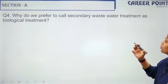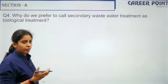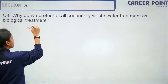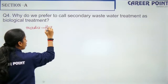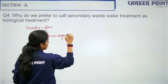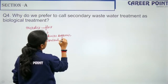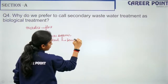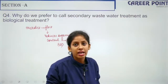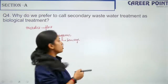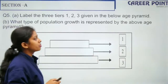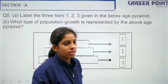Question 4: 'Why do we prefer to call secondary wastewater treatment biological treatment?' This comes from the sewage treatment topic. The answer: because microbes in the form of flocs are involved, and they reduce the organic content in sewage water by consuming the biological oxygen demand (BOD) from organic ions. The questions seem tough but the answers are simple — write the complete answer to earn full marks.